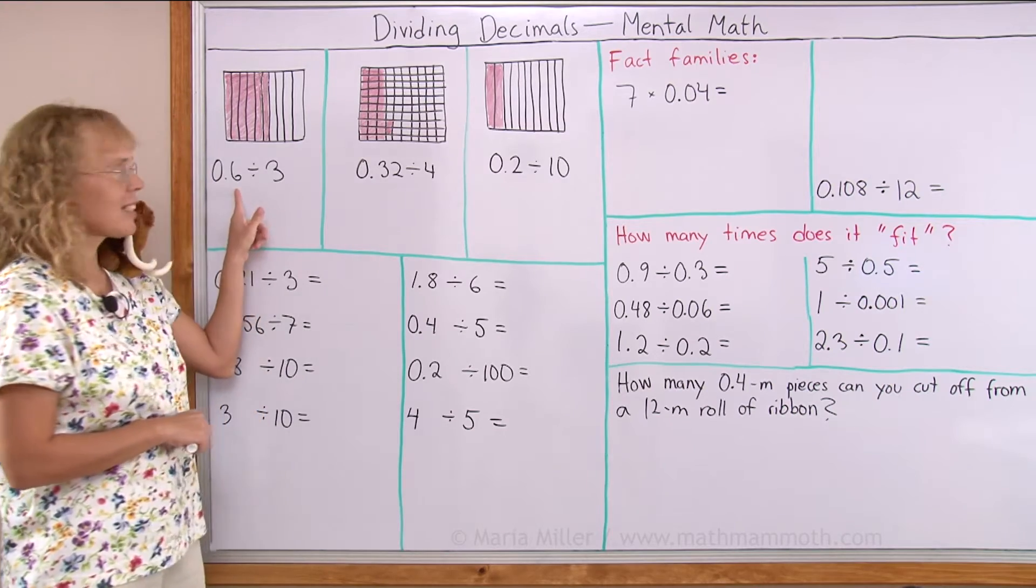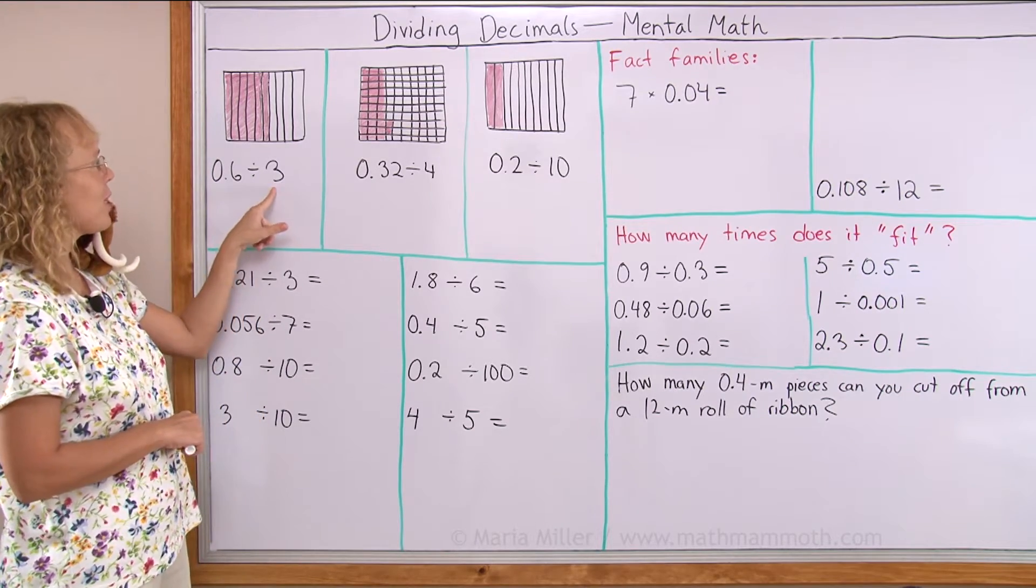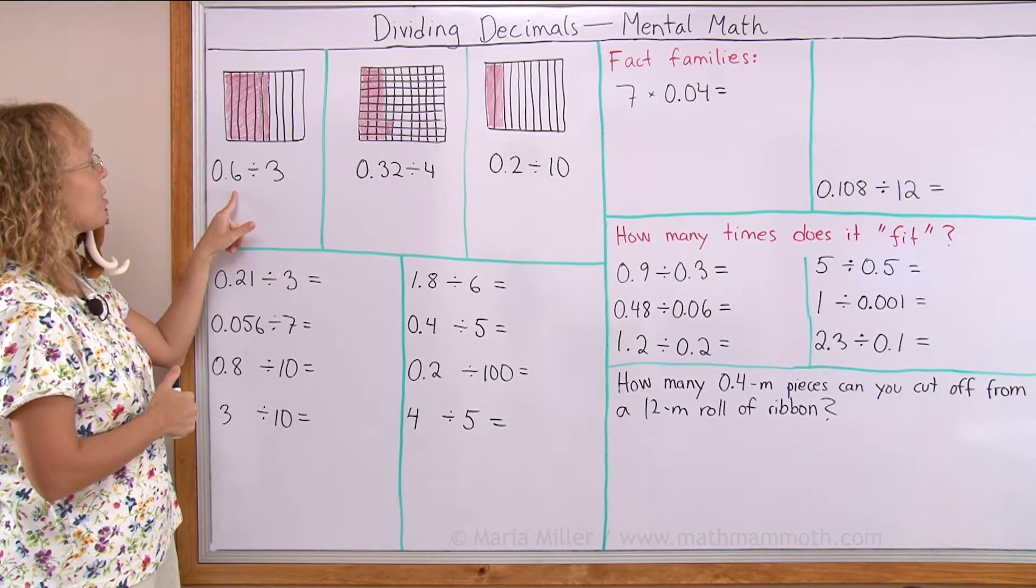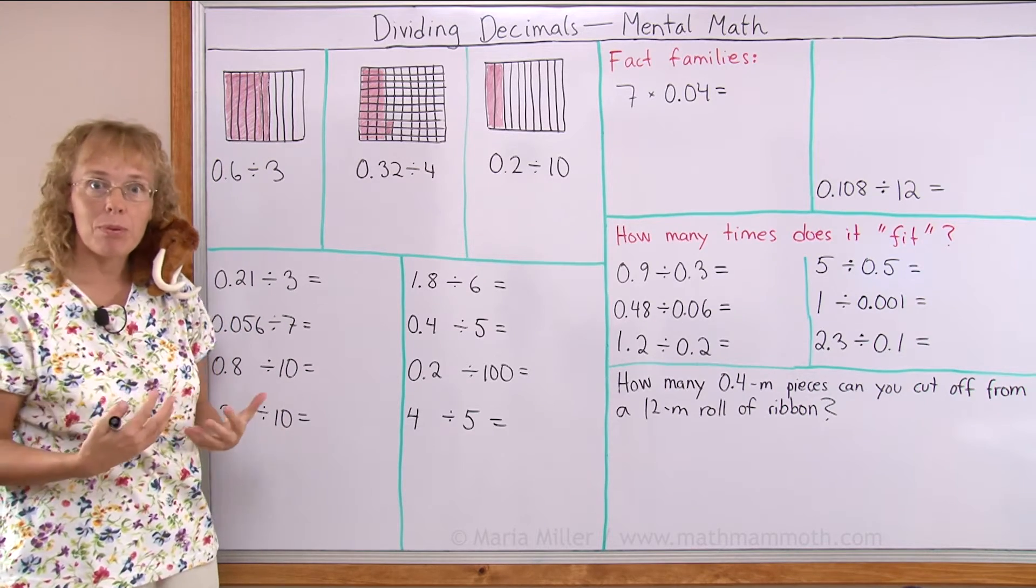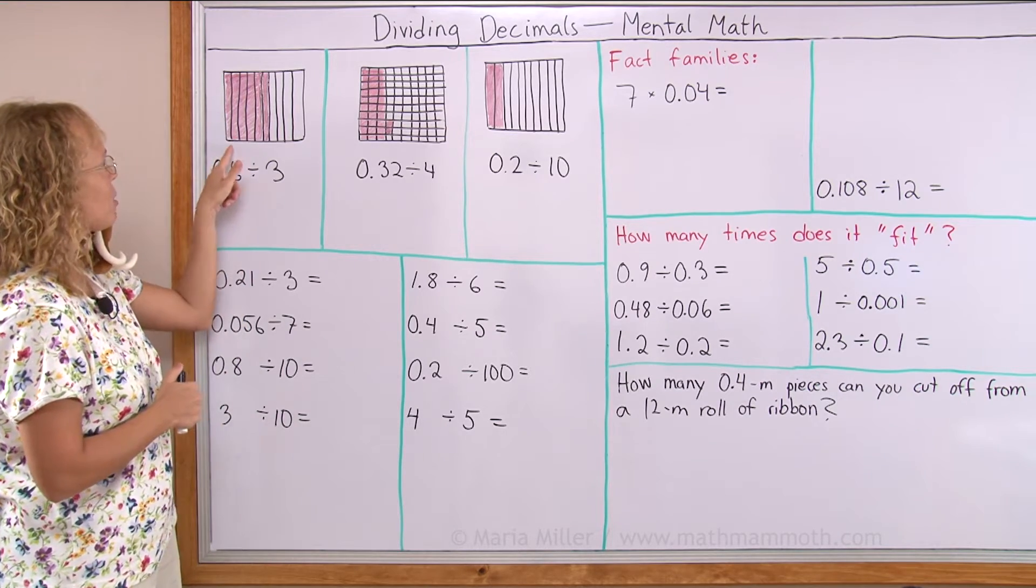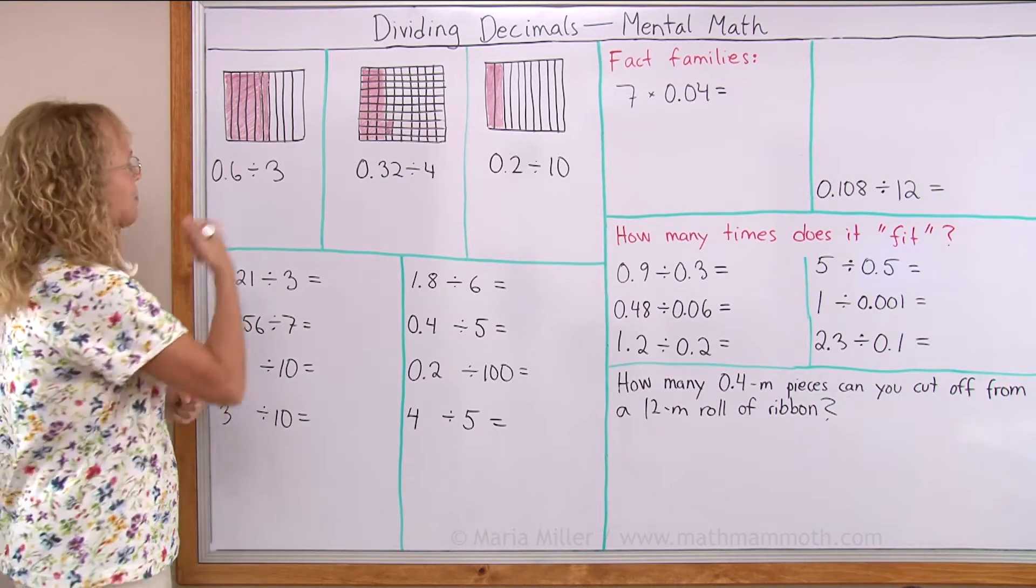Here's an example. If I have six tenths divided by three, you can think of sharing equally. If you have six tenths and you're dividing that equally between three people, how much does each person get? The answer is very simple, right? Each person would get two tenths.